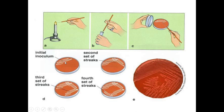So like this: first, second, third, and then the last. After incubation, we will get colonies. You can see the primary inoculum and the first set of streaks — here you cannot see any isolated colonies. Then in the second line also you cannot see any colonies. Then in the third and fourth sets, you can see the isolation of single, single colonies. The small dots are called colonies.